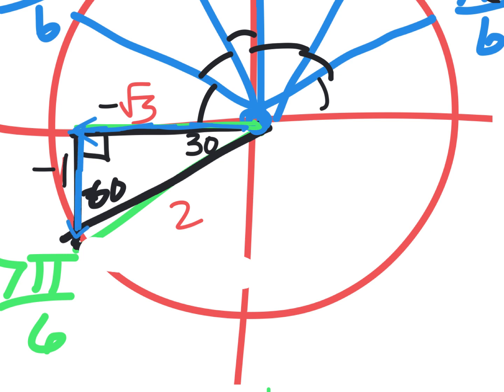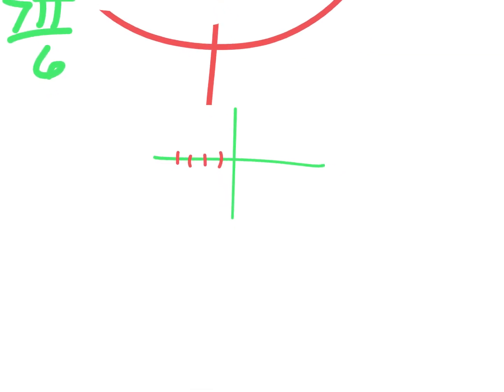So if this point right here was considered, it would be at negative four, comma, negative four. See how they both have a negative? That's why.